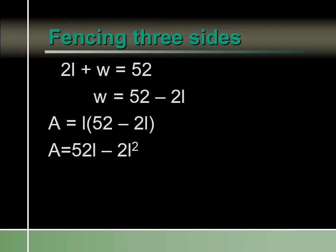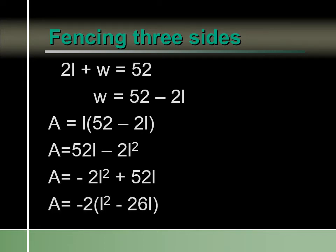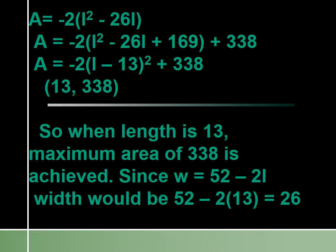Now we put it into work form. Distribute the L to get 52L minus 2L squared, rewritten as negative 2L squared plus 52L. Factor out negative 2, leaving L squared minus 26L inside. Take half of 26, which is 13, then square it to get 169. We're adding 169 times negative 2, which is subtracting 338, so we add 338 on the outside. Now we have a perfect square: negative 2 times L minus 13 squared, plus 338.